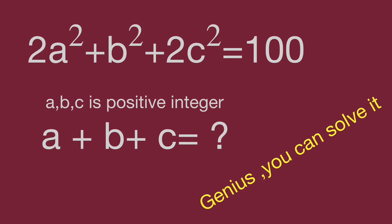We have 2a squared plus b squared plus 2c squared equal to 100. a, b, c are positive integers. Find the sum value of a, b, c — can you find the value for a plus b plus c?